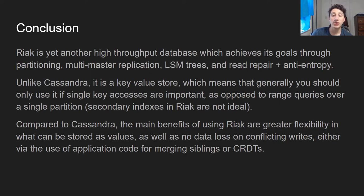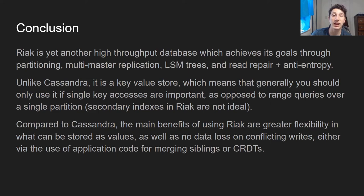Compared to Cassandra, the main benefits of using Riak are greater flexibility in data storage due to values, and the fact that conflicting writes no longer rely on last-write-wins, which is one of the biggest pitfalls of Cassandra. Instead, Riak allows you to deal with siblings and merge them in any way you see fit, or merge them automatically in the database using CRDTs. I hope this video was helpful — it was a short one. Now that we've touched on this key-value store, we can start talking about in-memory key-value stores and dealing with caching.